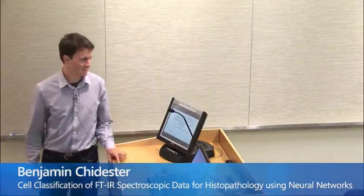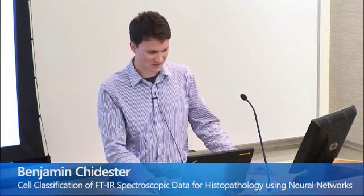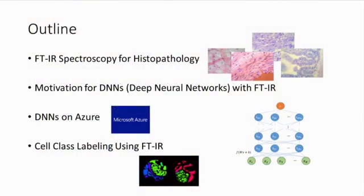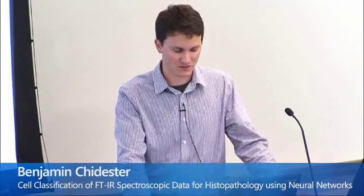Thank you. Thanks for the introduction, Vani, and thanks for joining. Vani introduced the title already — there's a lot of things there, but I'm going to go through and introduce them one at a time. As a brief outline, I'll first talk about the application of FTIR, which stands for Fourier Transform Infrared Spectroscopy for histopathology, some of the current challenges, and the motivation for using deep neural networks. I'll also talk about implementing DNNs on Azure, and finally, classifying cells of FTIR data to aid in the process of histopathology.